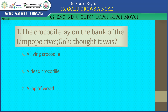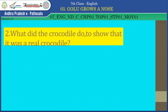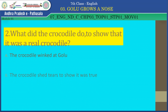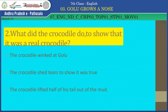What did the crocodile do to show that it was a real crocodile? A. The crocodile winked at Golu, B. The crocodile shed tears to show it was true, C. The crocodile lifted half of his tail out of the mud. Yes, great children — the answer is B: the crocodile shed tears to show it was true. I am appreciating you for remembering the story.